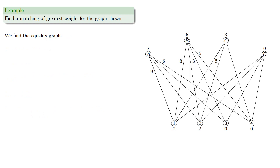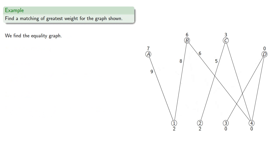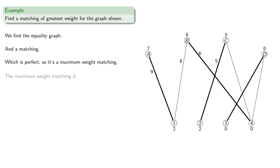We find the equality graph, and a matching, which is perfect, so it's a maximum weight matching. And so the maximum weight matching is employee A to task 1, employee B to task 4, employee C to task 2, and a new employee should be hired to do task 3.